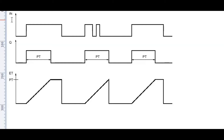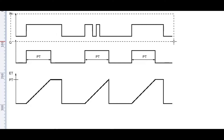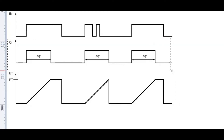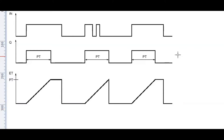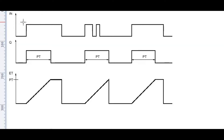Now let's see how this works. We have the graph of the input signal to the timer and this is the graph of the timer output. When we give a 0 to 1 signal — a positive edge — to the input of the timer, the timer starts and the output goes high.